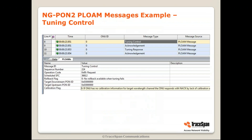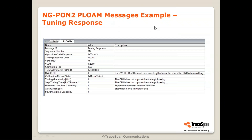Here we can see examples of what these messages look like — this is actually decoding done by TracePan's Analyzer. We have an NGPON2 analyzer, so you can see the tuning control message, which is a downstream message coming from the OLT to the ONU, along with the decoding of the different fields. The most important parameter is the target PON ID, which defines the target channel to which the ONU needs to switch. And this is the tuning response, which also has quite a lot of fields — the operation code response is ACK, meaning the ONU accepted this message.